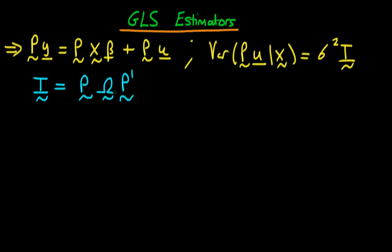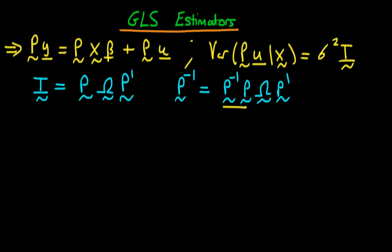If I take this expression and multiply both sides by the inverse of P, we have that P-inverse times the identity matrix — which is just P-inverse — is equal to P-inverse times P times omega times P-transpose. Notice that P-inverse times P yields the identity matrix, which when multiplied by omega is just equal to omega times P-transpose. So we've gotten rid of the first P in our expression.